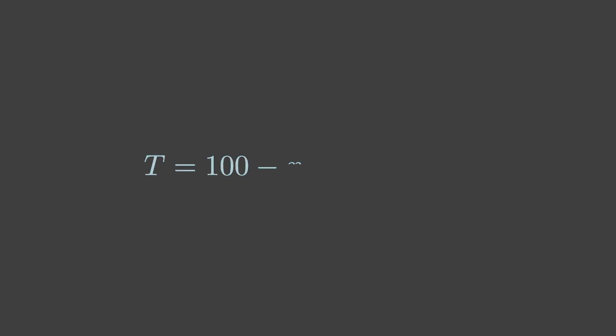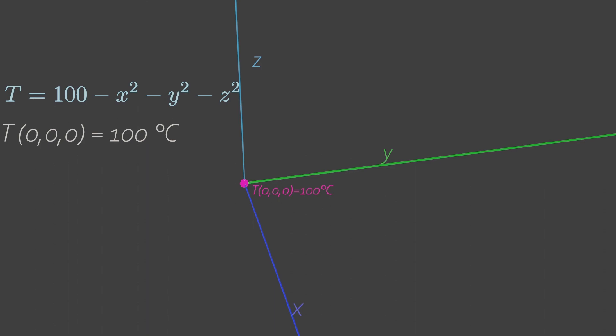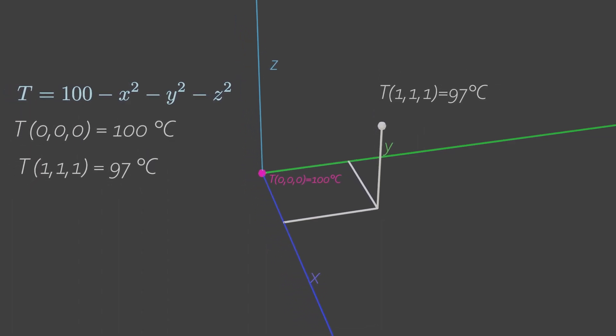Now, consider temperature reading which is given by this function in space. At origin, the temperature is found to be 100 degrees Celsius. Similarly, at this coordinate, the temperature is found to be 97 degrees Celsius.